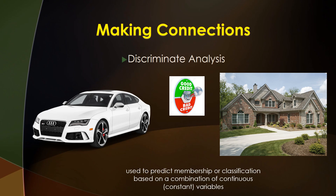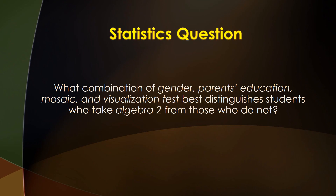So again, discriminant analysis is used to predict which group participants will be in — will you be in the good credit group or the bad credit group? The research question that needs to be addressed is: what combination of gender, parents' education, mosaic, and visualization tests best distinguishes students who take Algebra 2 from those who do not? In this scenario, the classification will be students who take Algebra 2 versus those who do not.